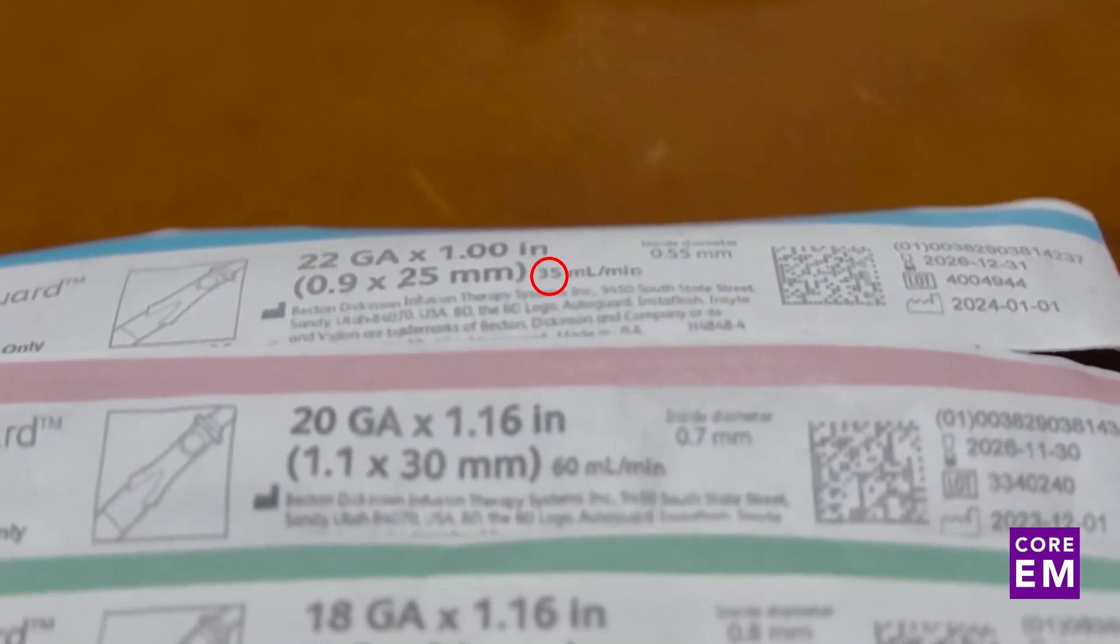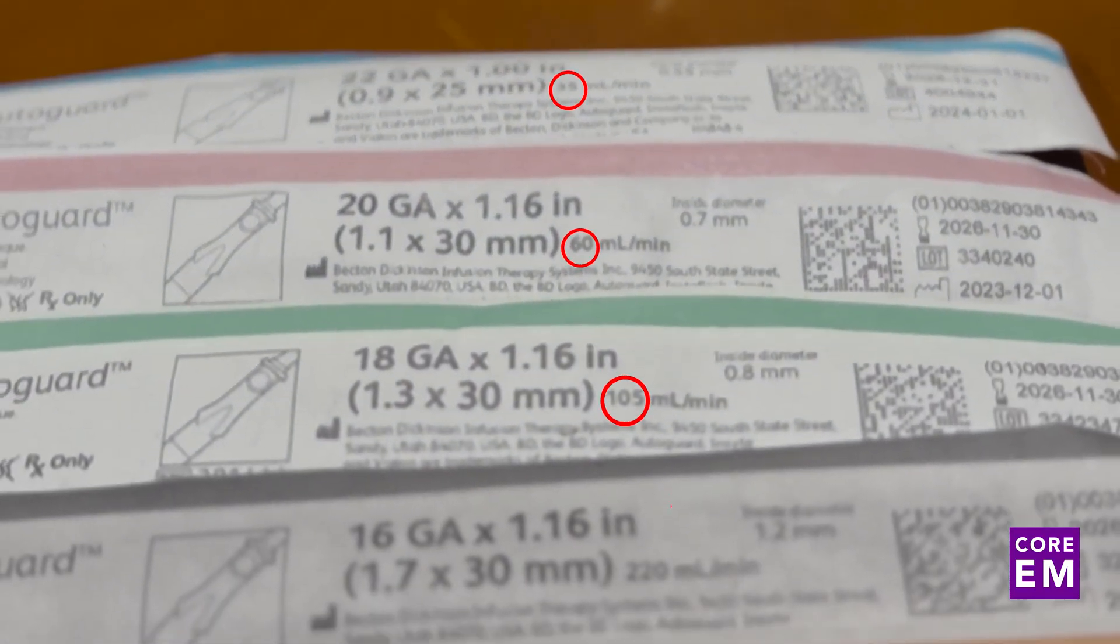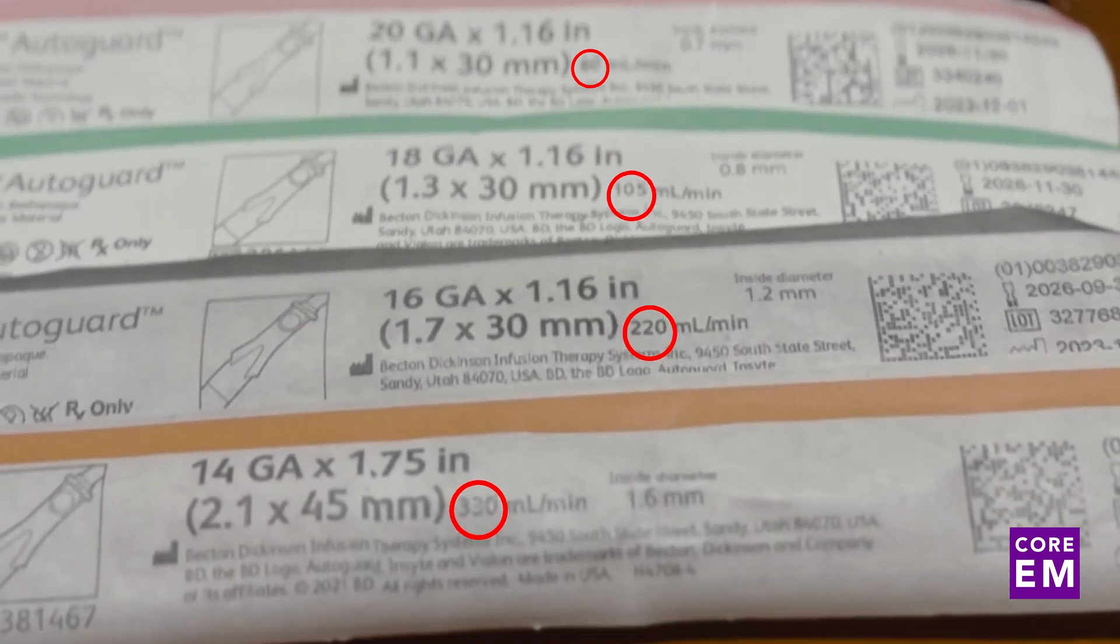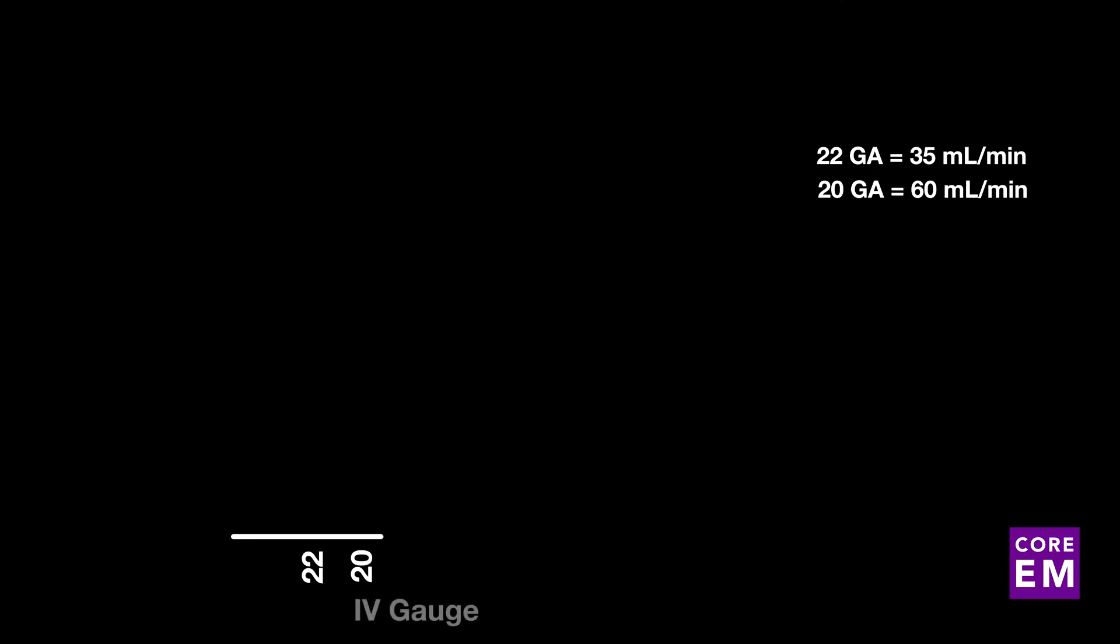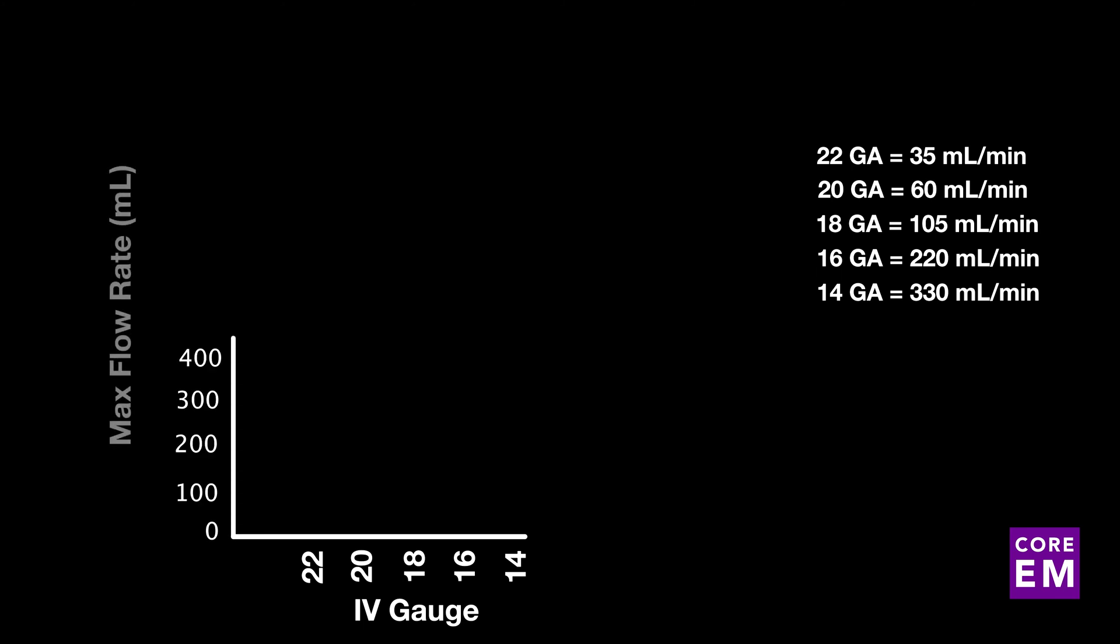On most packaging, you'll find this stealthily hidden information. And these are the flow rates as we go from 22 to 20 to 18 to 16 to 14, demonstrating this important relationship between the flow and the diameter.